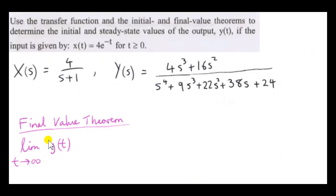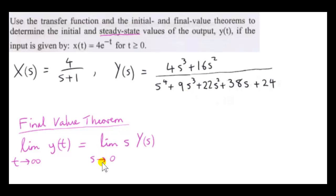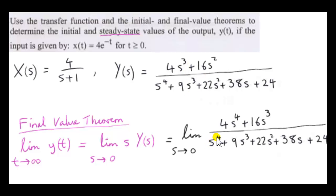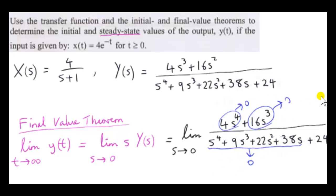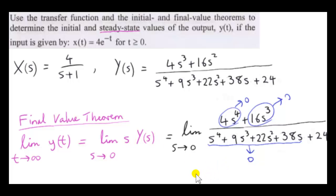Now we want the steady-state, or final value, of the output y(t). This is calculated by finding the limit as t → ∞ of y(t). We apply the final value theorem: we don't need the inverse Laplace transform; we calculate the limit as s → 0 of s times Y(s). As s → 0, all terms with s in the numerator approach 0, and in the denominator all s terms approach 0, leaving just 24. So s·Y(s) approaches 0 over 24, which is 0. The steady-state value of the output y(t) is 0.